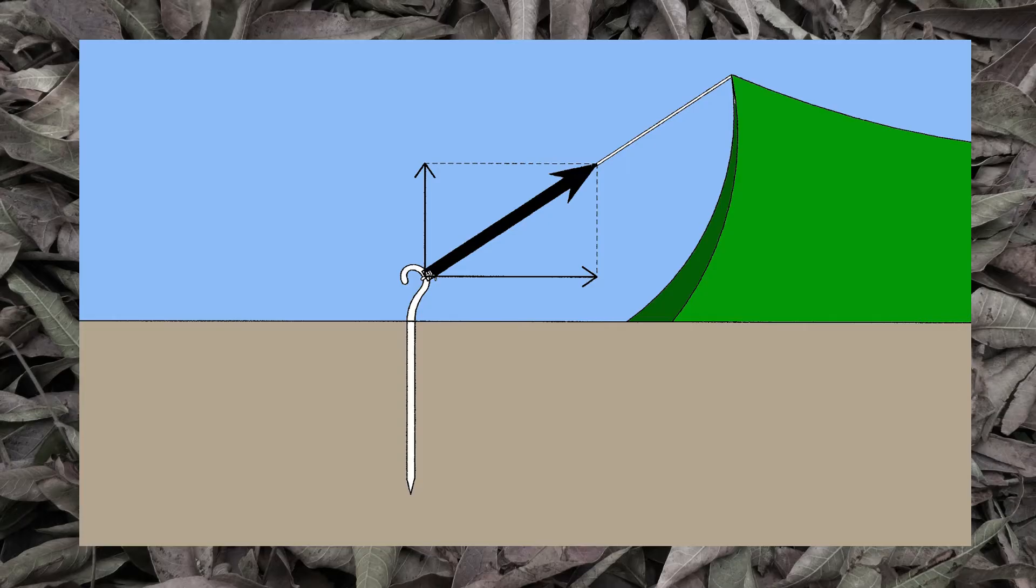In part, this drawing tells you that the guy line is trying to pull the tent stake sideways through the dirt towards the shelter, which isn't going to happen.